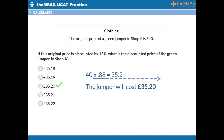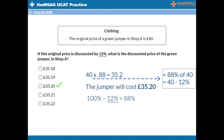Multiplying by 0.88 finds 88% of an amount, which is the same as the original amount reduced by 12%. By subtracting the percentage change from 100%, you will find the number that you need to multiply by. 100 minus 12 is 88, so the correct answer will be 88% of the original price.